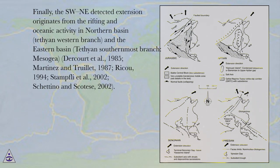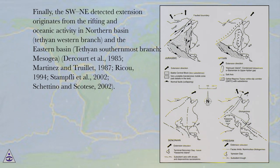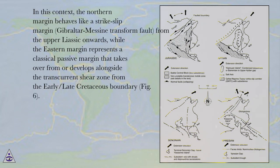The SWE-detected extension originates from the rifting and oceanic activity in the Northern Basin, Tethian Western Branch, and the Eastern Basin, Tethian Southernmost Branch, Messagia — Dercourt et al., 1985; Martinez and Trulet, 1987; Riku, 1994; Stampley et al., 2002; Shetty Noe and Skatis, 2002.